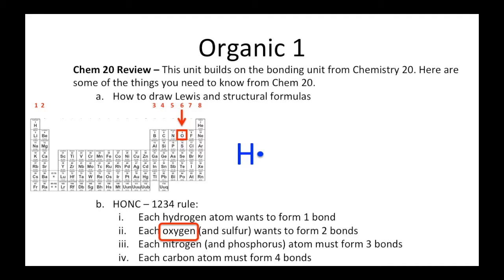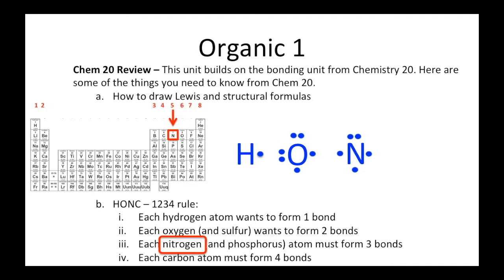Oxygen is found in group six, so it has six electrons in its outer level, but we have to fill it out a certain way. We place the first four, one on each side, and then go back around and start doubling up. That gives us oxygen's Lewis diagram. Nitrogen is in group five so it has five electrons, and carbon is in group four so it has four electrons.